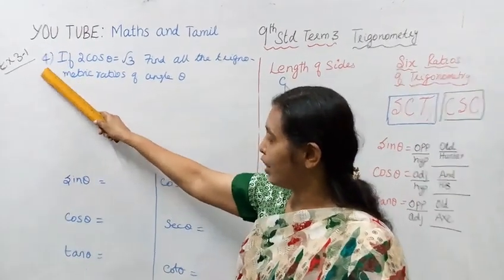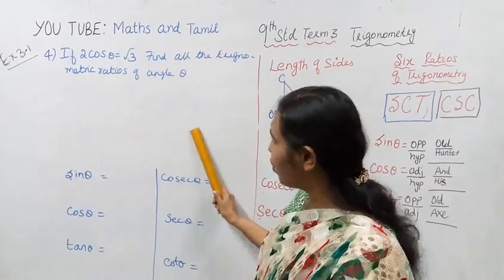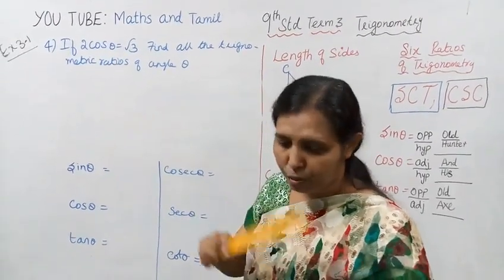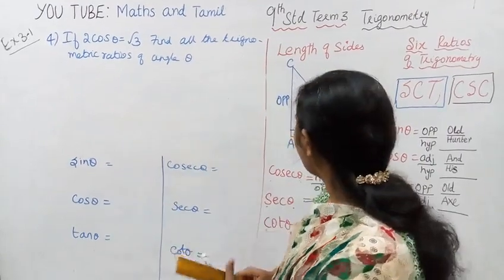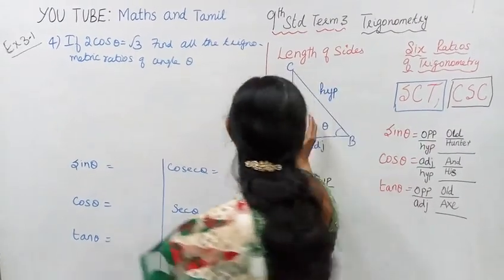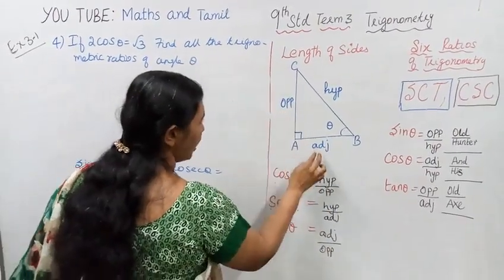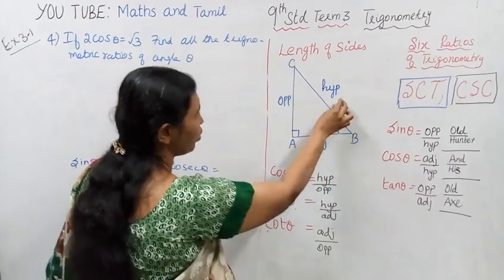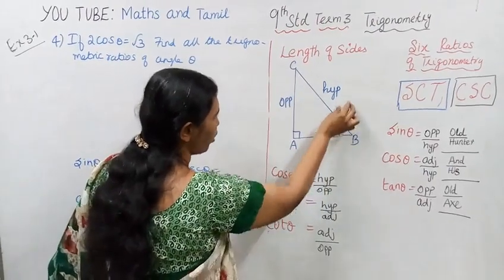For the first sum, Exercise 3.1, one diagram is given with values given. In the diagram, this side is the opposite, this is the adjacent, and this is the hypotenuse — the value is given.